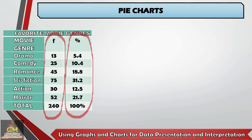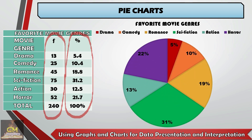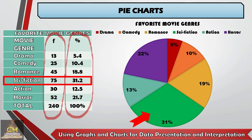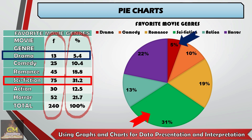From this given set of data, if we're going to convert this into a pie graph or pie chart, we have this. From this particular graphic organizer, we're able to recognize that science fiction is the most favorite movie genre by majority of the respondents, while drama is the genre preferred by the least — only 13 out of 240 respondents preferred drama as their favorite movie genre.